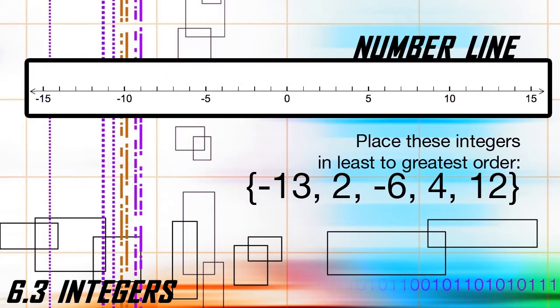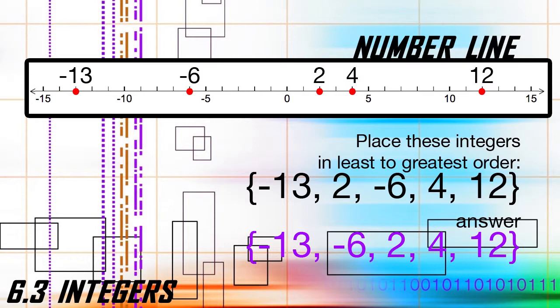Here are the beginning steps for ordering integers. Step one, plot and label all the integers on a number line. Step two, the order will appear starting at the far left being the least, going to the far right being the greatest. Step three, record your answer based on how they appear above the number line.